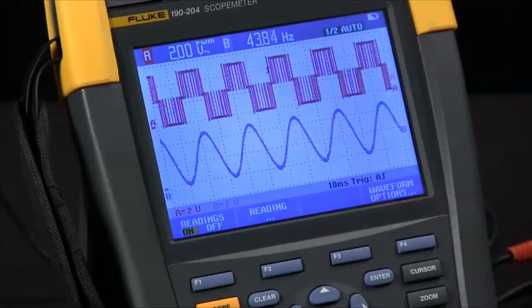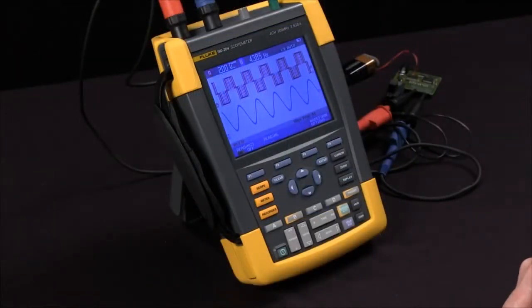Now we have a reading for A, a reading for B, and that's some basic setup for the Fluke scope meter. I'll see you next time.